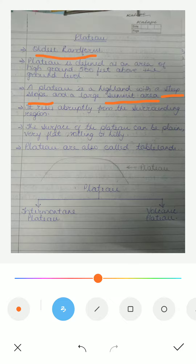The surface of a plateau can be plain, flat, rolling, or hilly. Plateaus are also called table land. As you can see in the picture, it is formed like a table with a flat top. According to their formation, plateaus can be divided into two categories: intermountain plateaus and volcanic plateaus, which will be explained in the next video.